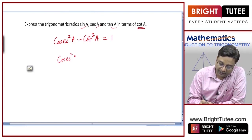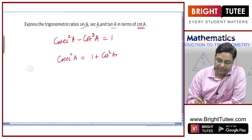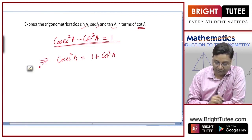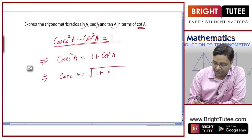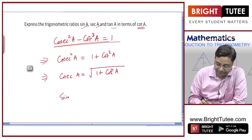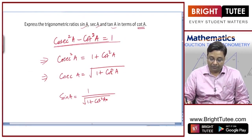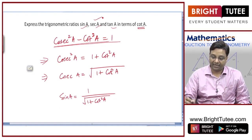So let's write cosecant squared a equal to one plus cot squared a. This is the identity and it can also be written as: cosecant a equals the square root of one plus cot squared a. Now we can write these identities — sine a will be one by square root of one plus cot squared a.